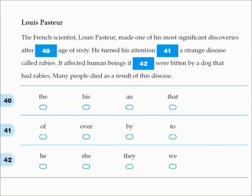And finally, this one I want to show you—for each one, the number here, 40, means which of these words next to 40 would fit into that sentence. So, 'The French scientist Louis Pasteur made one of his most significant discoveries after the age of 60'—or 'his age of 60,' 'an age of 60,' or 'that age of 60.' So you've got to read it through and say which one would make most sense. After the age of 60, after his age of 60, after an age of 60. I think it's the age of 60. That feels right to me as a native English speaker.